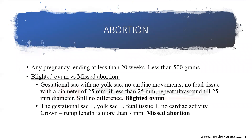We need to know the difference between blighted ovum and missed abortion. In missed abortion, fetal death has occurred. The gestational sac is there, yolk sac is there, fetal tissue is there, but there is no cardiac activity and the crown-rump length is more than 7 mm. That means there is a missed abortion.